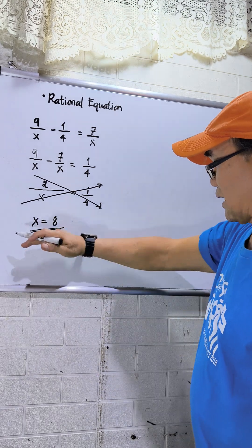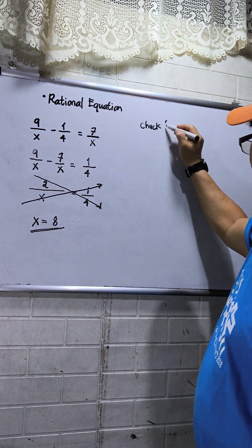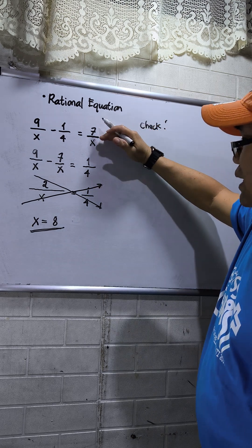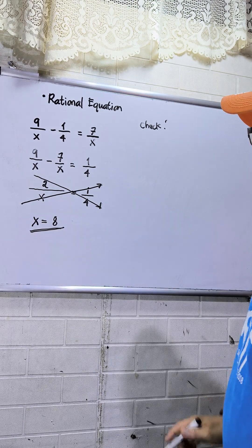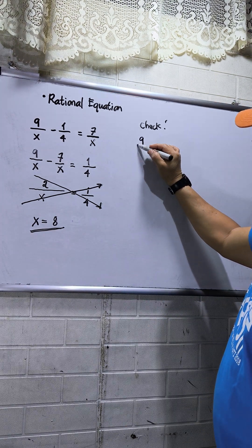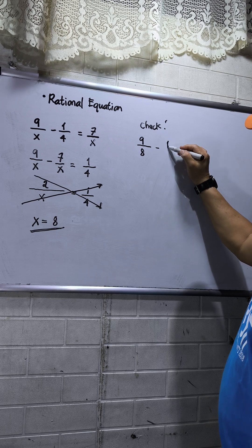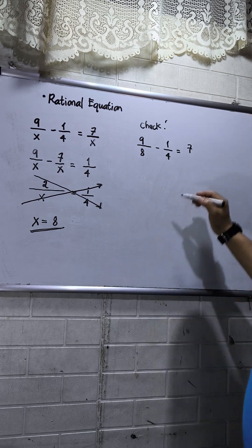So to make sure that my x value is correct, I will check or I will apply checking. So to check, I will go back to the original equation. I will plug in x equals 8. So 9 over 8 minus 1 over 4 equals 7 over 8.